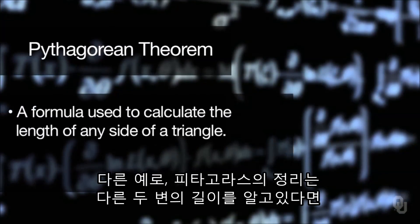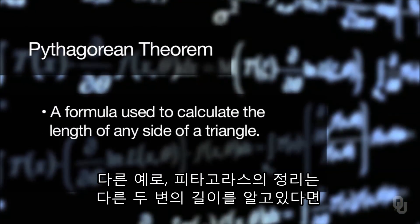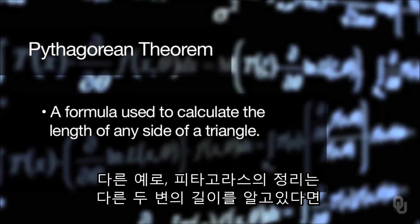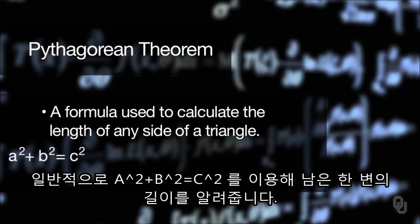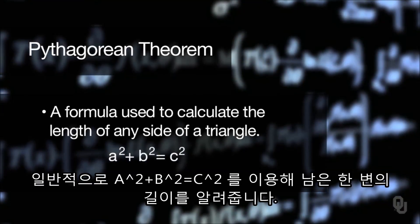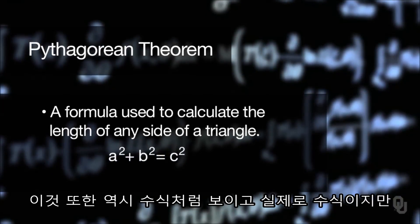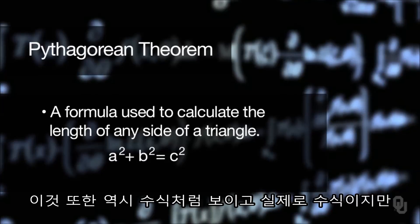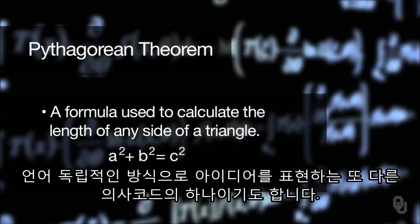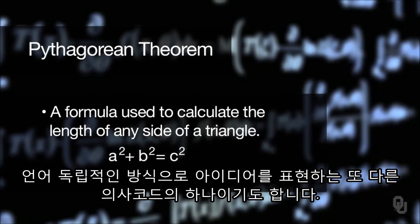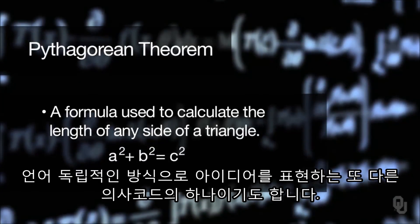Another example is the Pythagorean theorem, which tells you the length of any side of a triangle if you know the other two sides. It's a common one: A squared plus B squared equals C squared. That looks like a formula, but it is also another example of pseudocode — a way of expressing an idea in a language-independent manner.